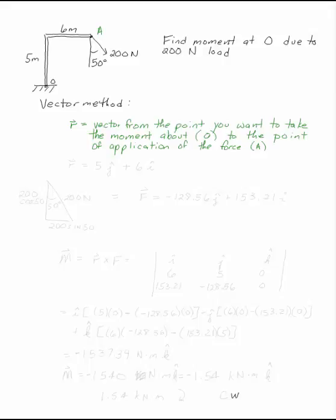So to get from O to A, we're going to go up 5, that's 5j, and over 6, plus 6i. That's our R vector.